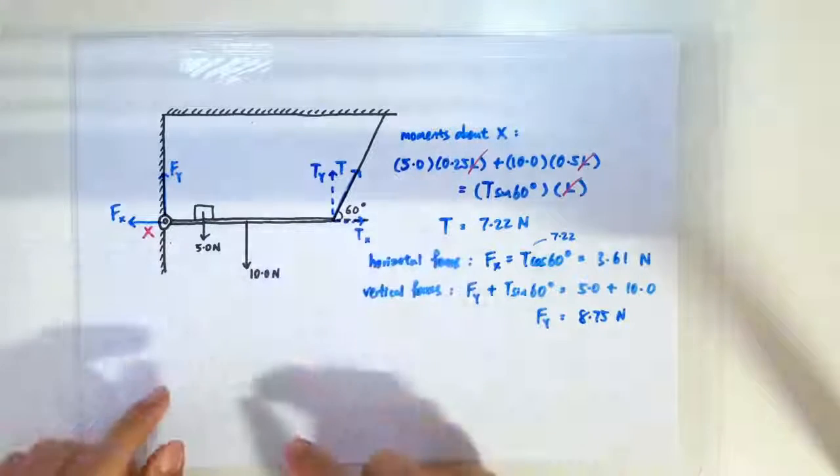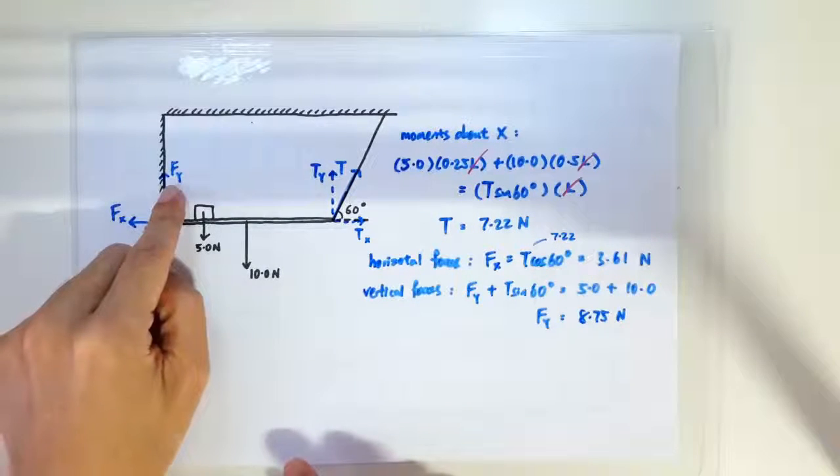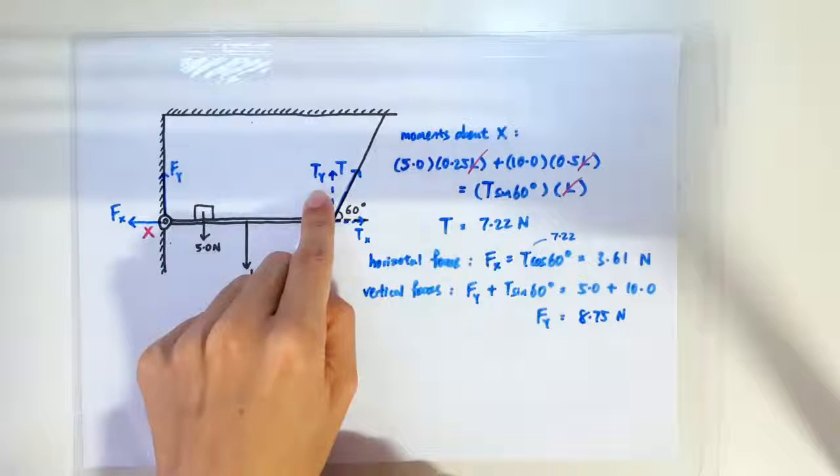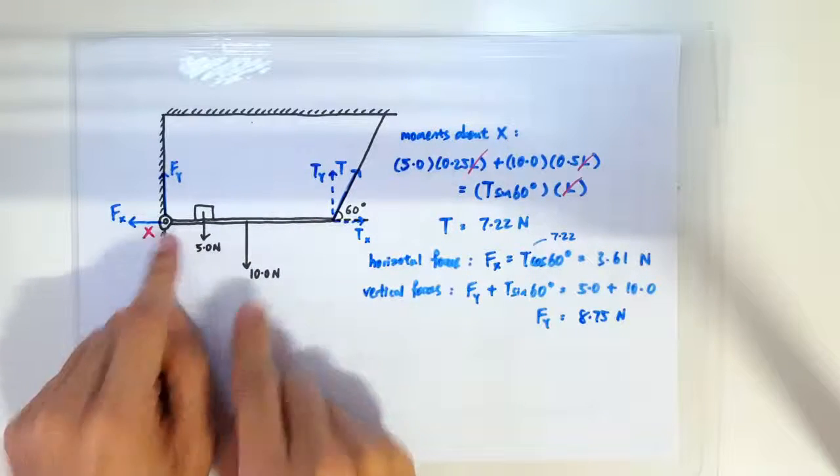Vertically, we have the upward Fy and the vertical component of tension, which must balance the downward 5 and 10 newtons. So Fy can be solved to be 8.75 newtons.